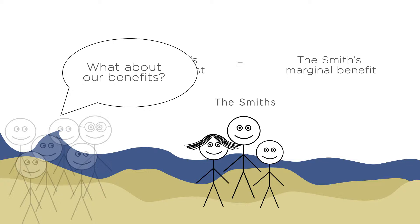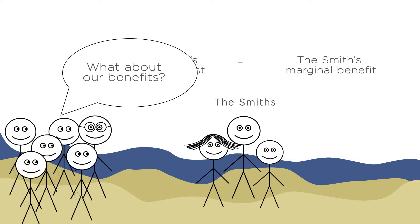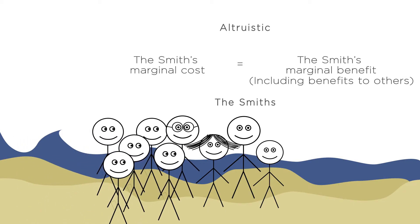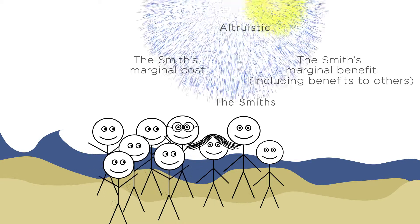But what if the Smiths also care about other people's enjoyment of the fireworks? That is, the Smiths might be altruistic. Their utility might actually incorporate the utility of other people in the maximization decision. Suppose that the Smiths care so much about me and my friends that the Smiths' marginal benefit includes not only their own visual benefits, but all of ours as well. Then they'll do the right thing and set off the right amount of fireworks.